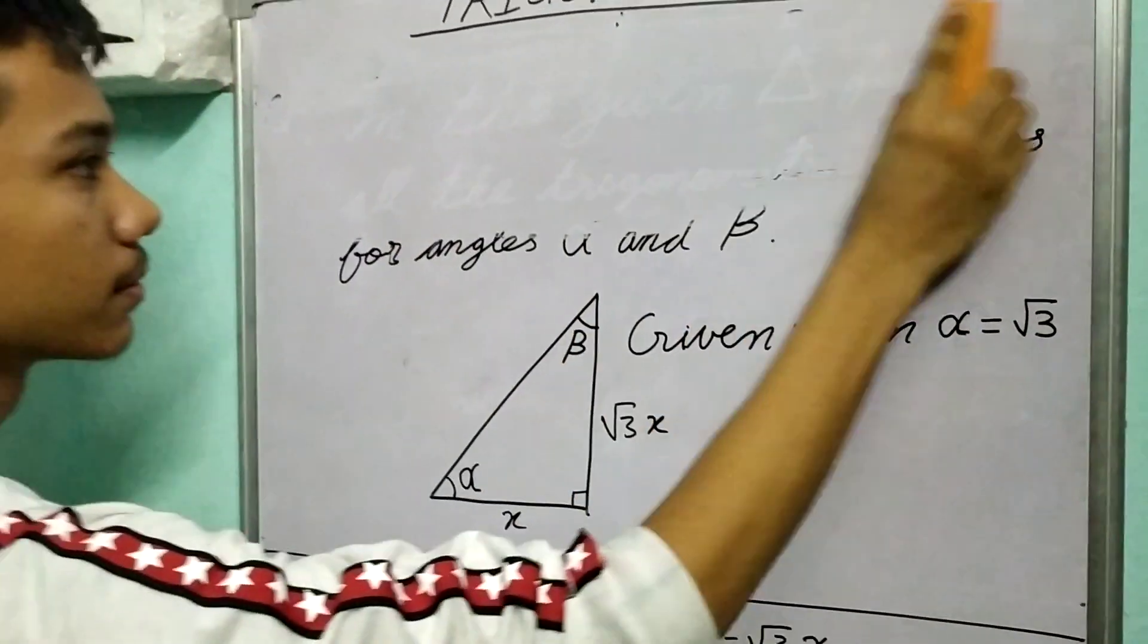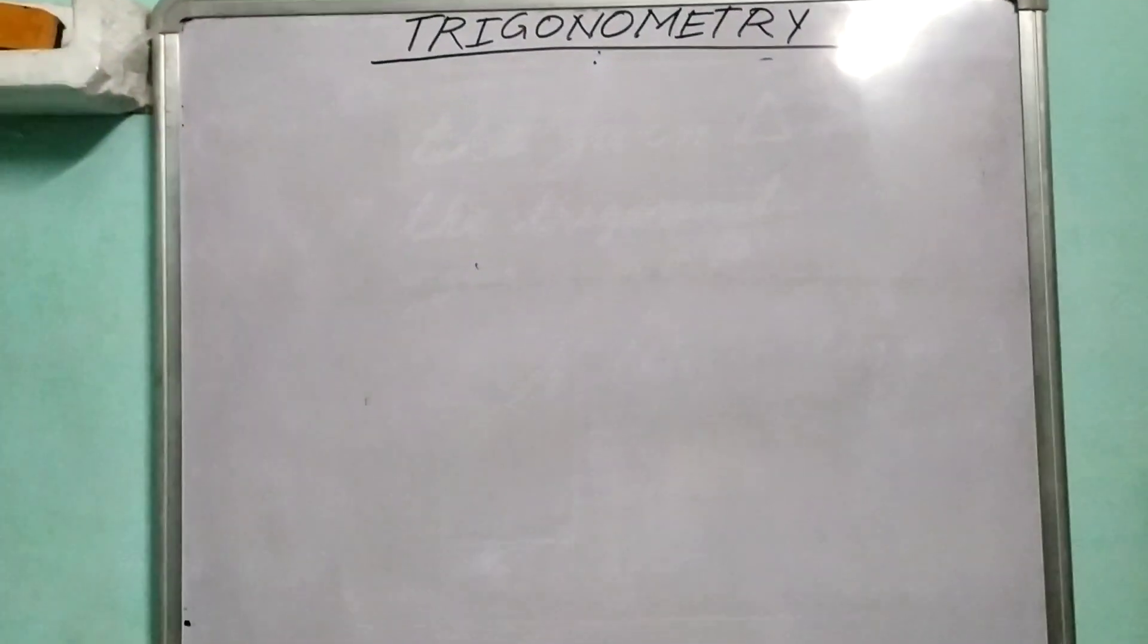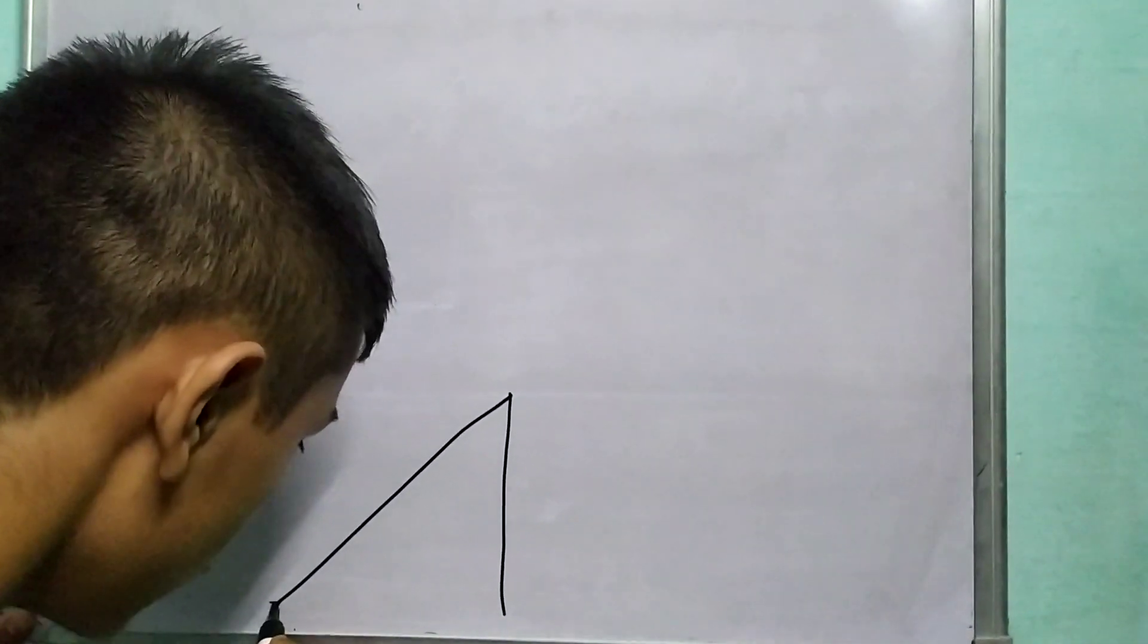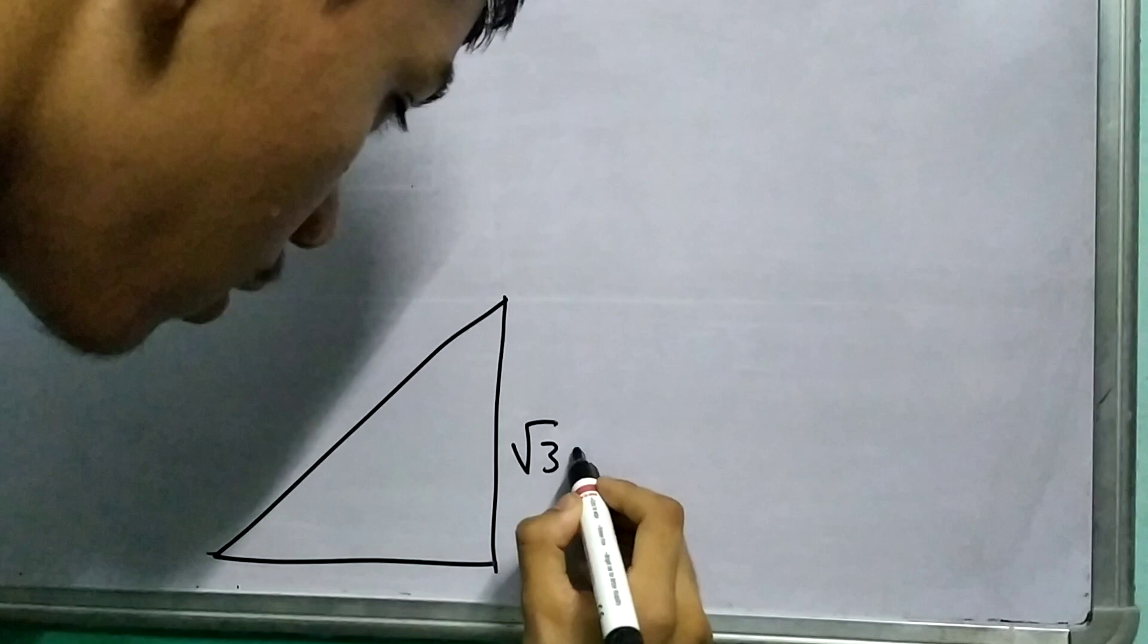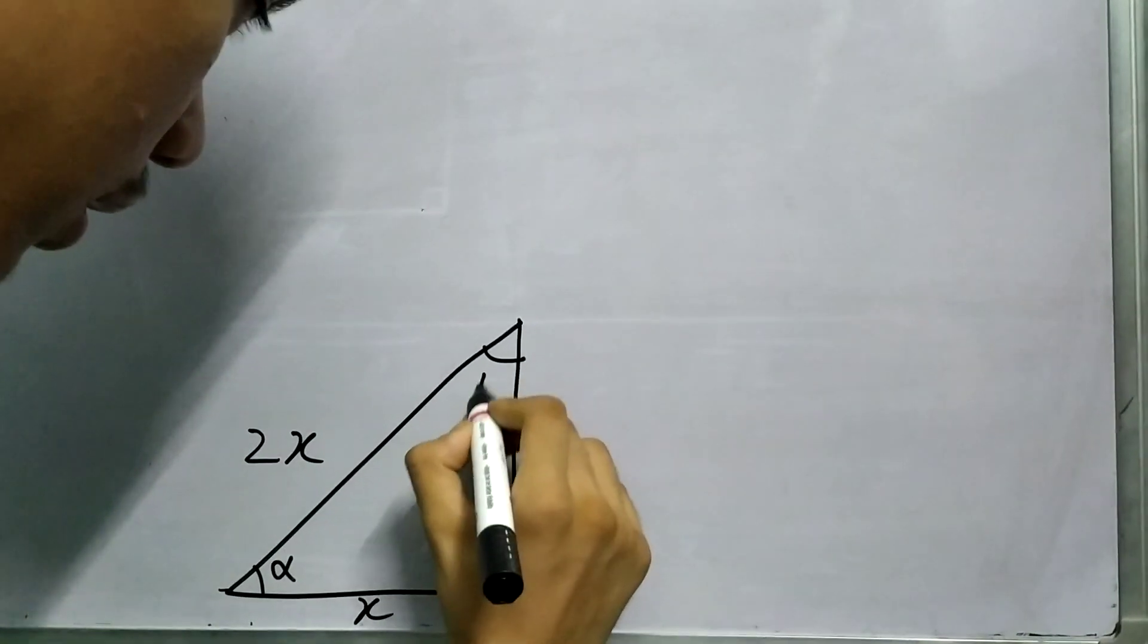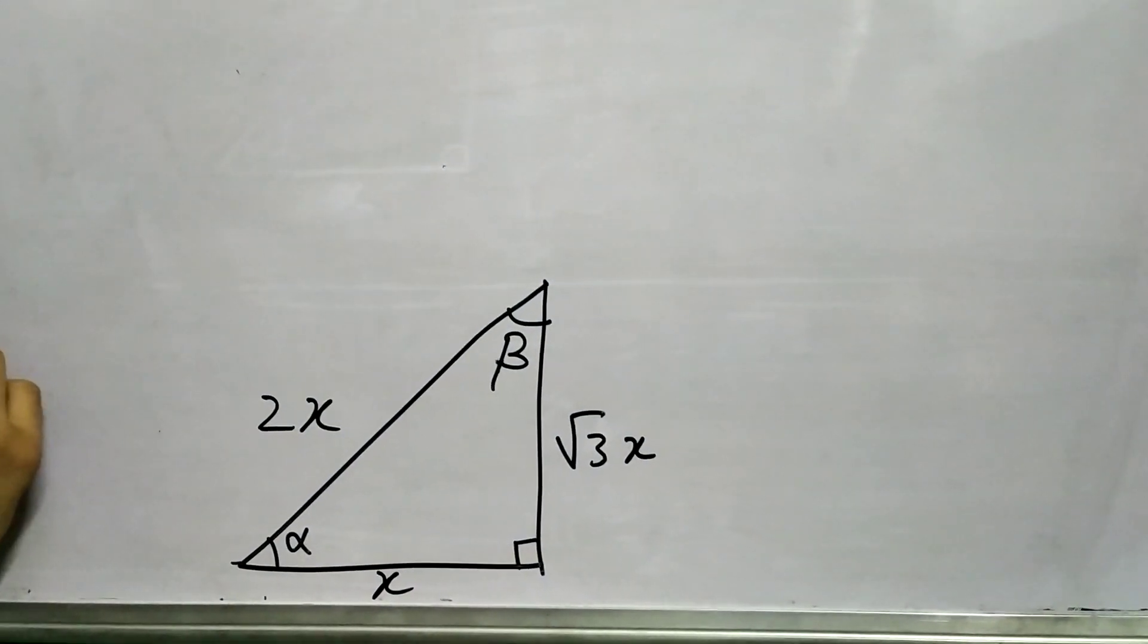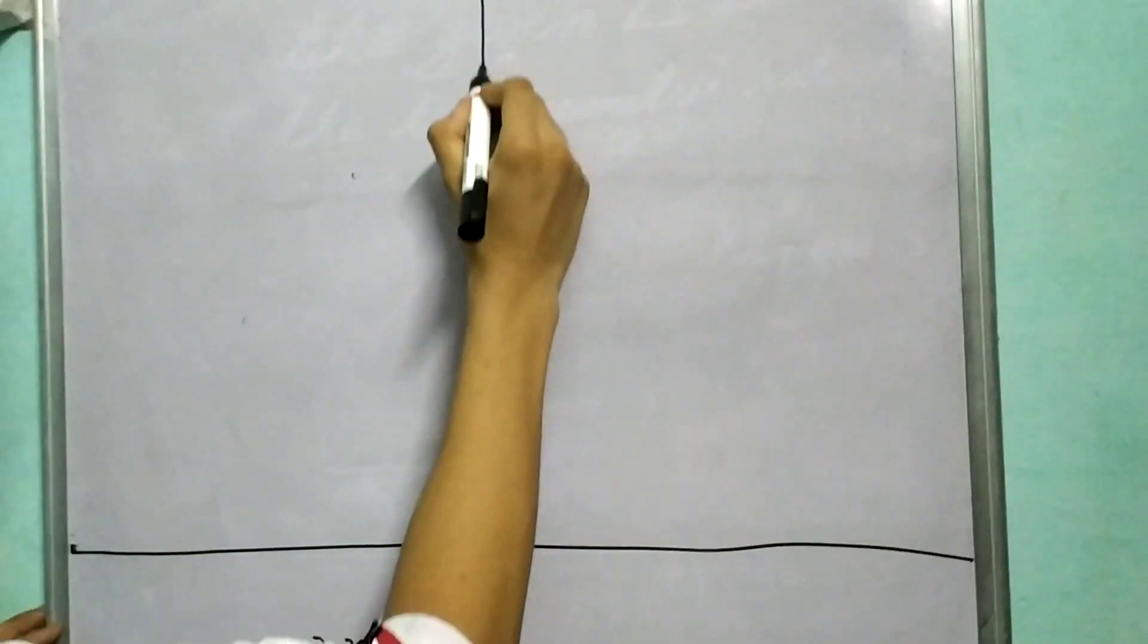So let's draw the entire thing again. There you go. This was our triangle with √3x, 2x, and x. Again, we're labeling this angle as α, this as β, and this is 90 degrees. Let's quickly draw a table to find out all these ratios.